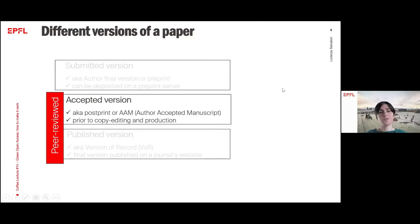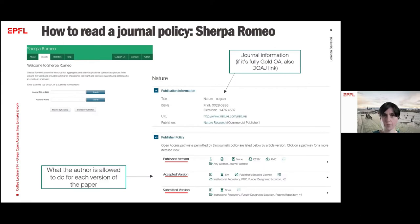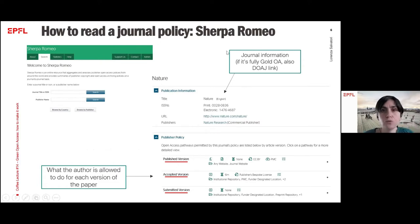You might ask yourself where you can find all the information about the conditions to make Green Open Access happen — the version you're allowed to upload, the repository, the embargo. Of course, this is in the journal policy. Sometimes these policies are not easy to read, and that's why I would like to show you this very useful tool called Sherpa Romeo.